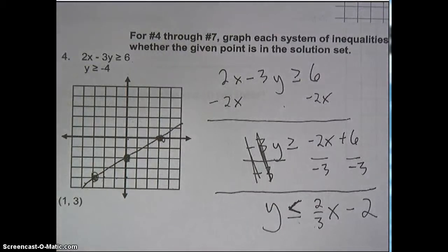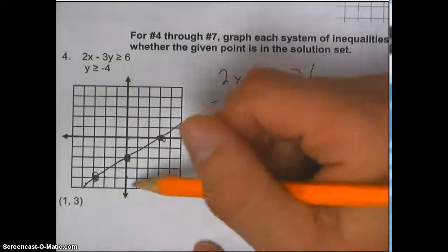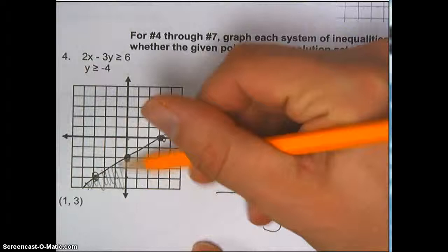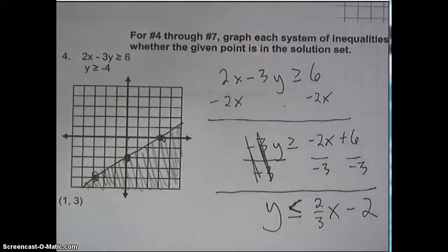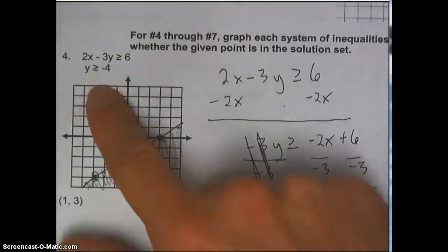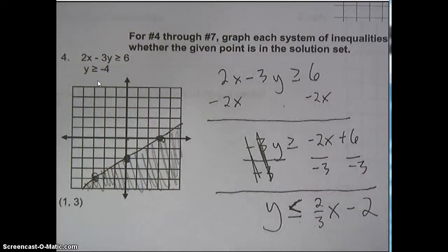Now I've got to shade it. It says y is less than, so I'm going to grab a pencil and shade the area beneath. Now the last part of this is the line y is greater than or equal to negative 4. That's a straight horizontal line.